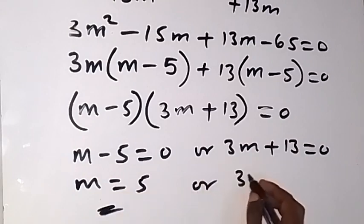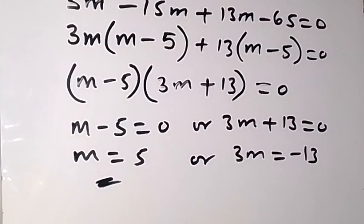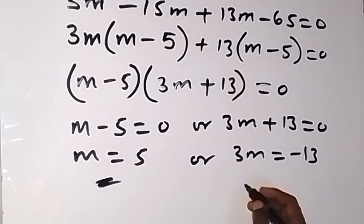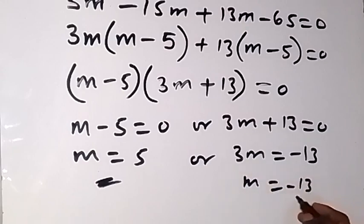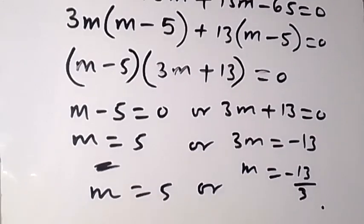Or we have 3m = -13, and you can divide both sides by 3 here to get m. So m will now be equal to -13/3. These are the two values of m.